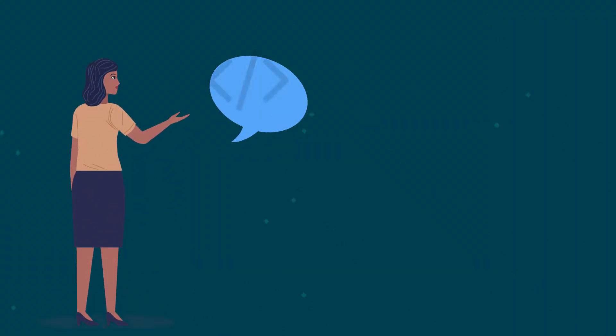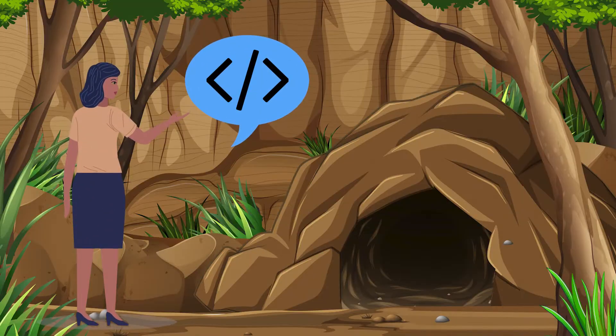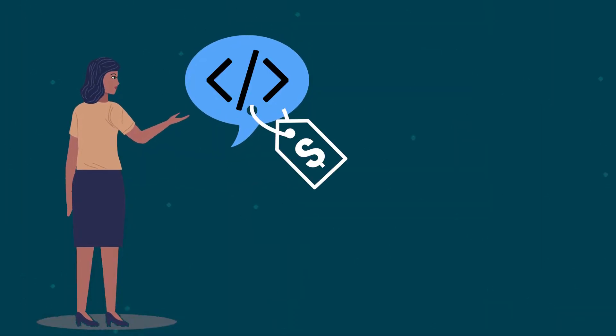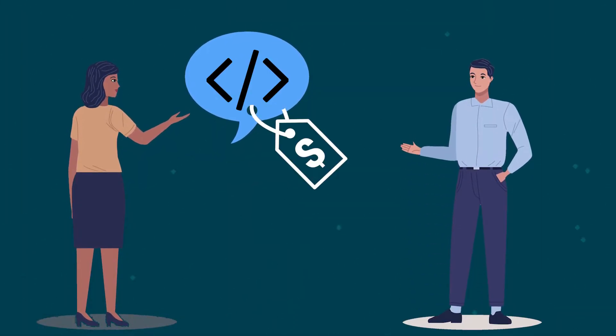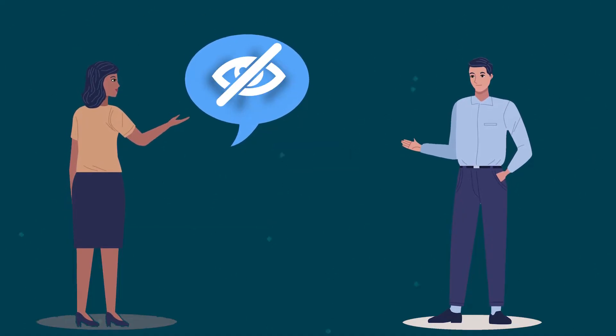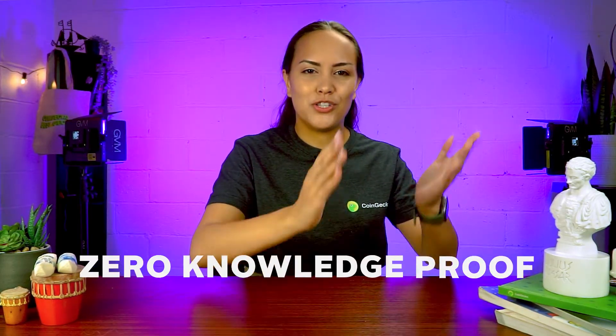Hey there, imagine this. You have a top secret code that opens a mysterious door in a cave. You're willing to sell the code to your friend Jerry. However, you want to prove to Jerry that you have the code without revealing it in any way. Is that even possible? What if we told you that it is, through a method used in cryptography known as zero-knowledge proof.